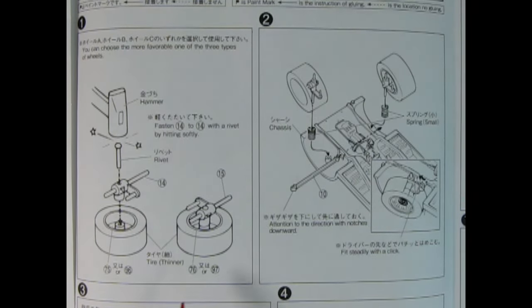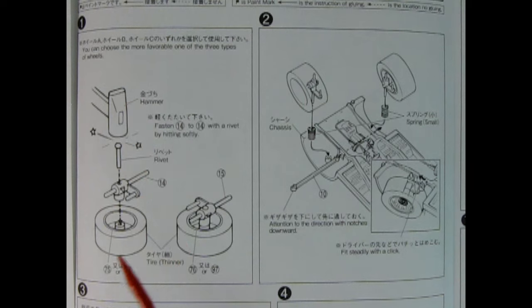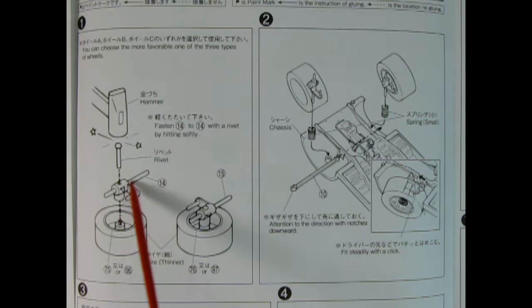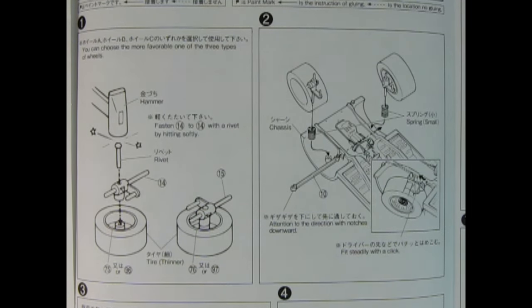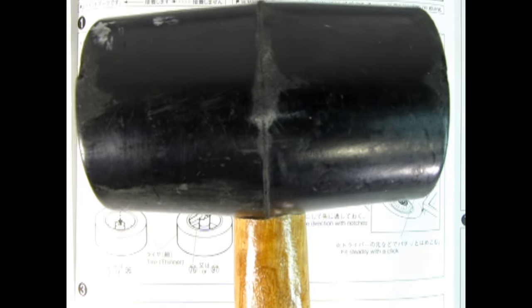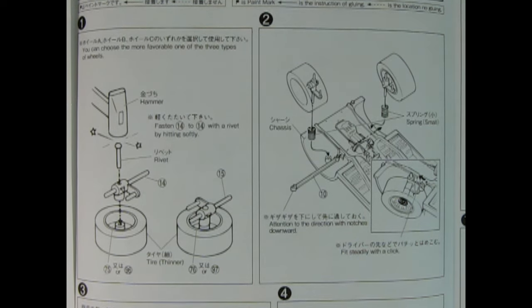Panel 1 shows our wheel assemblies going together and it says you can choose the more favorable one of the three types of wheels. It doesn't show the tire and the wheel going together, but it's just assumed that you would push the wheel into the center of the tire. So you have the wheels here, the king pins, you also have your rivet going through the center and then this hammer here tapping the rivet down. And I love the hammer illustration they use. Like you're going to use this kind of hammer, that's my big rubber mallet which looks like the hammer of Thor going in to punch in these little tiny rivets. So I would suggest something smaller.